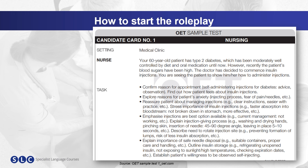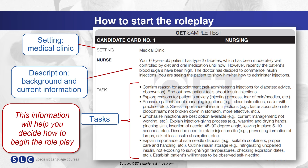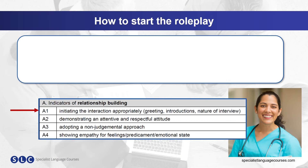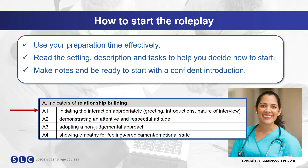Let's start by looking at this role card. We can see from the setting that you're working in a medical clinic. Then we can see the information next to the nurse — it gives us a description of background and current information, and we can see all the tasks that you need to complete. All this information is important as it will help you understand how to begin the role play. Use your preparation time effectively: read the setting, description, and tasks to help you decide how to begin, make notes, and be ready to start with a confident introduction.